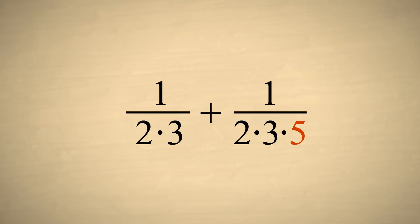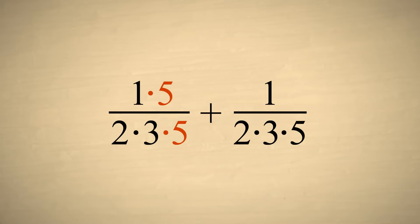We can remedy this situation by multiplying the numerator and denominator of the first fraction by five. This doesn't change the value of the fraction since it's the same as multiplying the entire fraction by one.